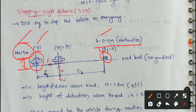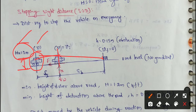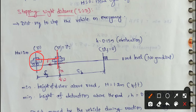When the driver sees the obstruction and decides to stop, there is a reaction time before the brake is applied. After this, the brake is applied — this time is called the reaction time. The vehicle travels from this place to the braking point, and then brakes over some distance to stop. This total distance is the stopping sight distance.